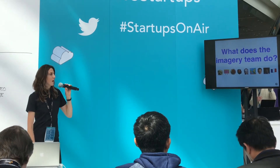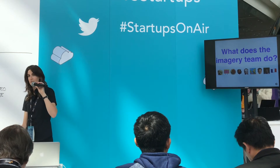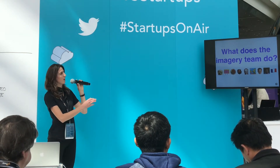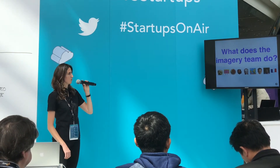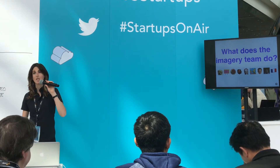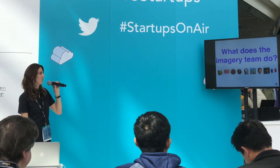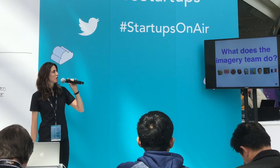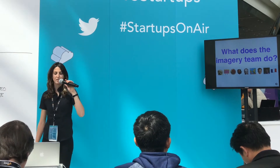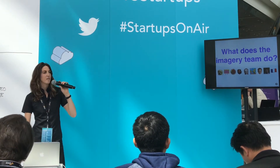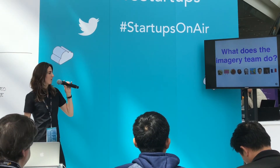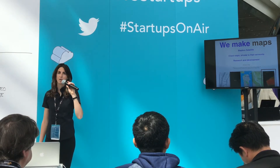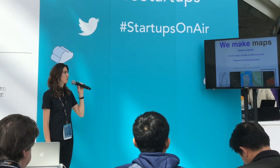So you might be asking: what is it that the imagery team at Mapbox does outside of creating really awesome emojis for ourselves? This is our team of nine: Virginia, Jacques, Charlie, Damon, myself, Sean, Matt, Pratik, and Vincent. So what is it that we do at Mapbox? We make maps — that's really at the core of what we're doing inside of Mapbox.